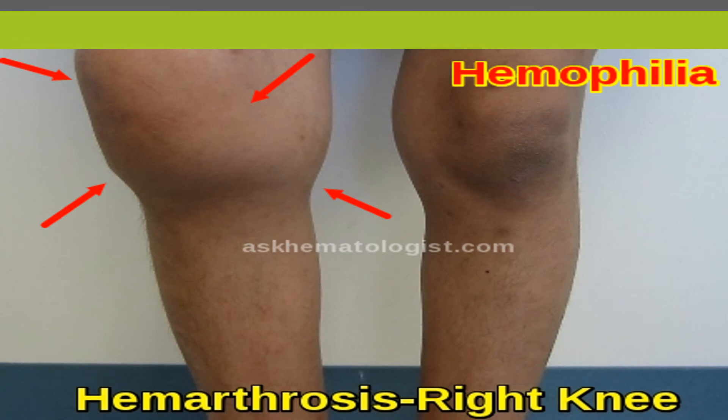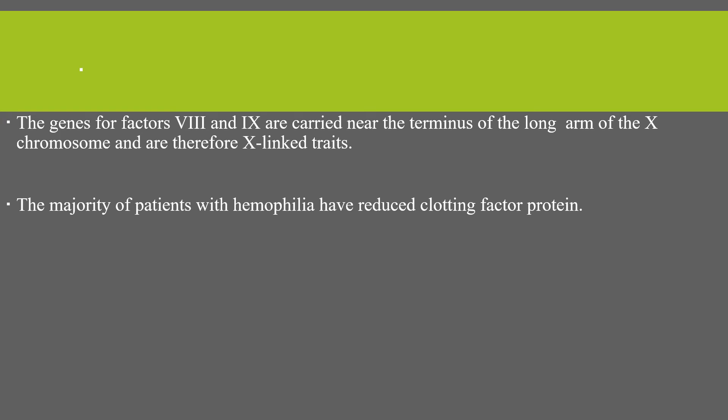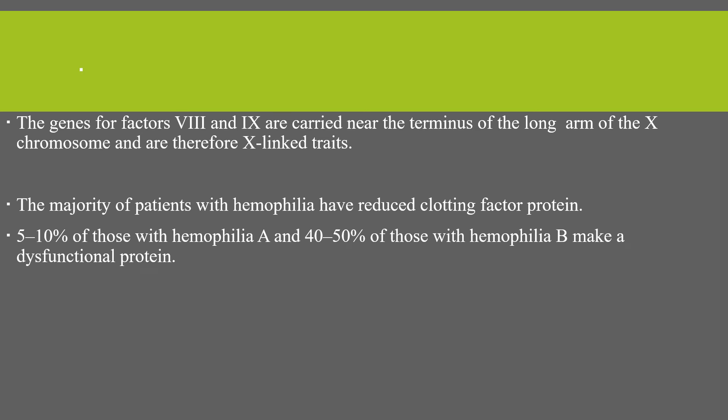This image shows a child with hemarthrosis of the right knee due to hemophilia. The genes for factor 8 and factor 9 are carried near the terminal end of the long arm of the X chromosome, and they are therefore X-linked traits, so males are predominantly affected. The majority of patients with hemophilia have reduced clotting factor protein, while 5 to 10 percent of hemophilia A and 40 to 50 percent of hemophilia B patients may have a dysfunctional protein despite a normal quantity of clotting factor.